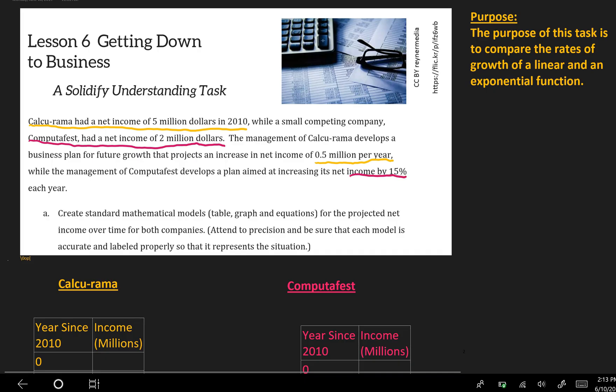So since we know the purpose of this task is to compare a linear and exponential function, let's go ahead and identify that Calcurama is linear and Computafest is exponential. I can tell that Calcurama is linear because it says per year. So that indicates a constant rate of change, $0.5 million per year. Every year they're making $0.5 million more.